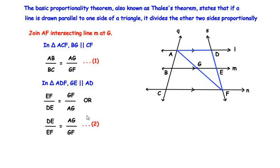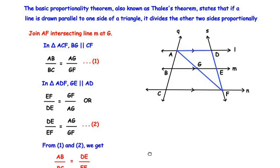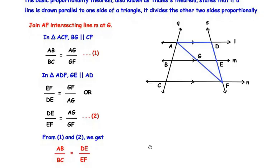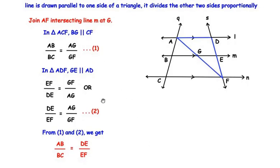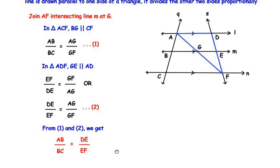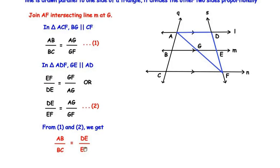Comparing equation 1 and equation 2, we see that the right-hand side fraction is the same in both. Therefore AB over BC equals DE over EF. This is what we had to prove, and we have proved it using the basic proportionality theorem.